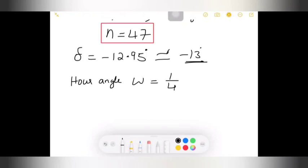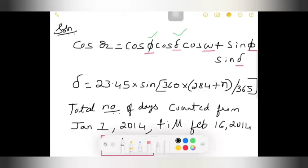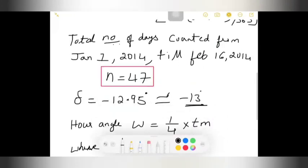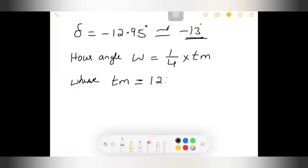Next, we will find that hour angle W. That is equal to the formula for this is 1 by 4 into Tm. Tm is where I need to determine Tm here. Tm is nothing but related to time. In the problem, it is given as 9:30 a.m. When you calculate Tm, we will take reference time as 12 noon. 12 noon minus 9:30, the difference will be almost 150 minutes. Tm will be in terms of minutes. This is my Tm.